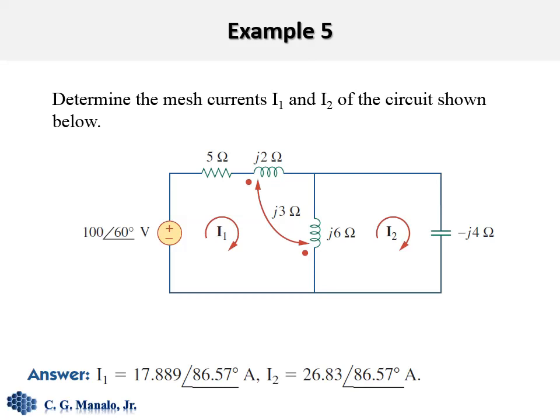In this problem we are asked to determine the two mesh currents I sub 1 and I sub 2. As you can see, the two loops are not physically isolated — they are connected as one network. But as you can see, these two inductors are magnetically coupled and the dot locations are also indicated. Before we can solve this problem, we need to know the actual current that flows in the branches of this circuit.